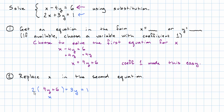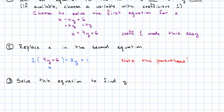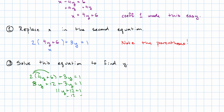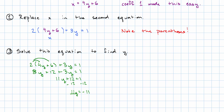Note the parentheses here — we need the entire four y plus six multiplied by two, because the entire four y plus six is what's equal to x. So now we have an equation with only y as a variable. We want to solve it: two times (four y plus six) plus three y equals one. Distribute: eight y plus twelve plus three y equals one. Combine like terms: eight y plus three y is eleven y. Subtract twelve from both sides: eleven y equals negative eleven. Divide both sides by eleven: y equals negative one.